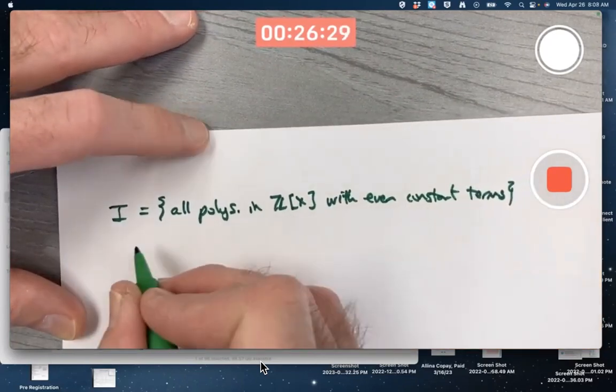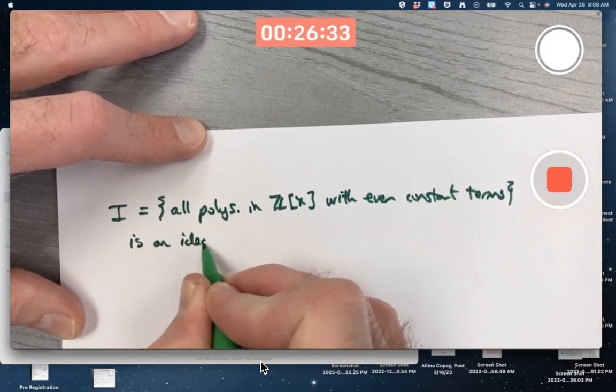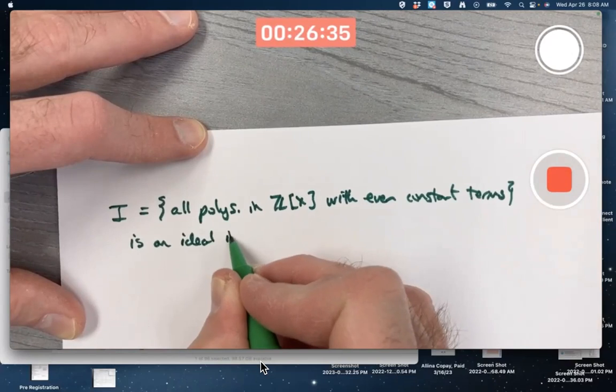So I is a collection of all polynomials in Z[x] with even constant terms. This is an ideal in Z[x].